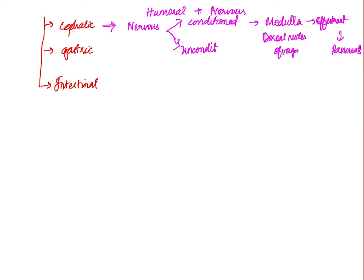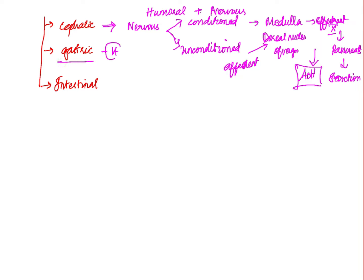The unconditioned reflex is an inborn reflex. Here, placement of food in the mouth stimulates the taste buds, and from the taste buds through afferent fibers it reaches the dorsal nucleus of the vagus in the medulla oblongata, and again through efferent fibers it reaches the pancreas to stimulate secretion.